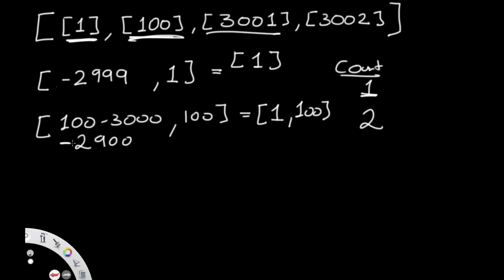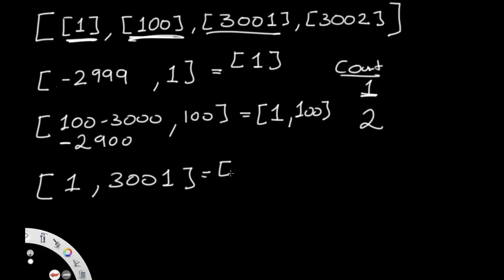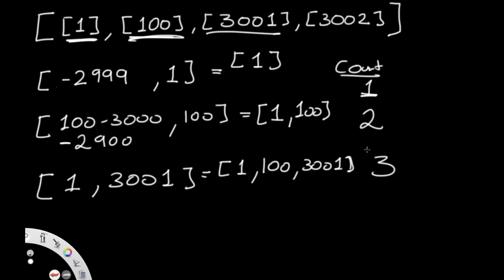Now let's go to 3001. So 3001 minus 3000 gives us a value of one, and we go all the way up to 3001. The number one is in this range, 100 is also in the range, and 3001 is also inside this range. So our count becomes three.